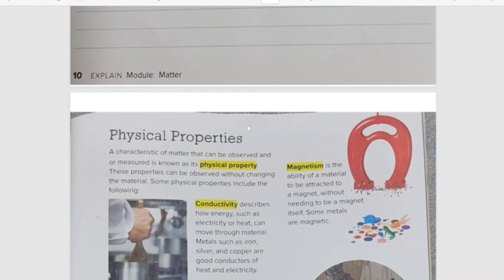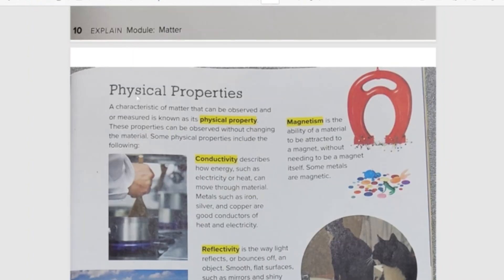So measurements is measurement, observation is what you see, and properties of matter. So that is in Book 1. Here you will see properties of matter. Physical property, so a characteristic of matter that can be observed and measured. Observe and measure, physical property.